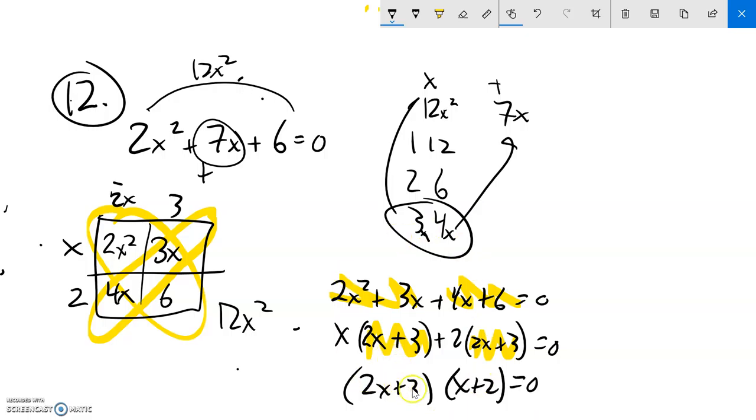So these two things, this times this is equal to 0. So that means that either this is 0 or this is 0.